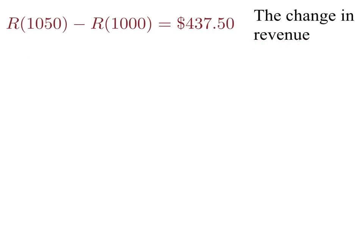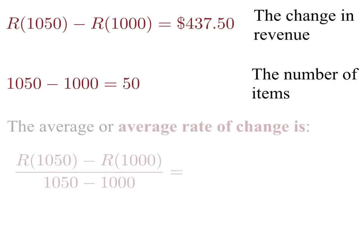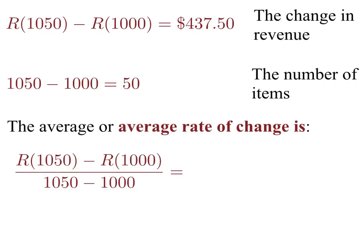So consider our difference there was $437.50. That was a change in revenue. And I was looking between 1050 and 1000 car seats. So I had 50 items. And so the average rate of change would be R of 1050 minus R of 1000, all of that divided by 1050 minus 1000, which is $437.50 divided by 50.